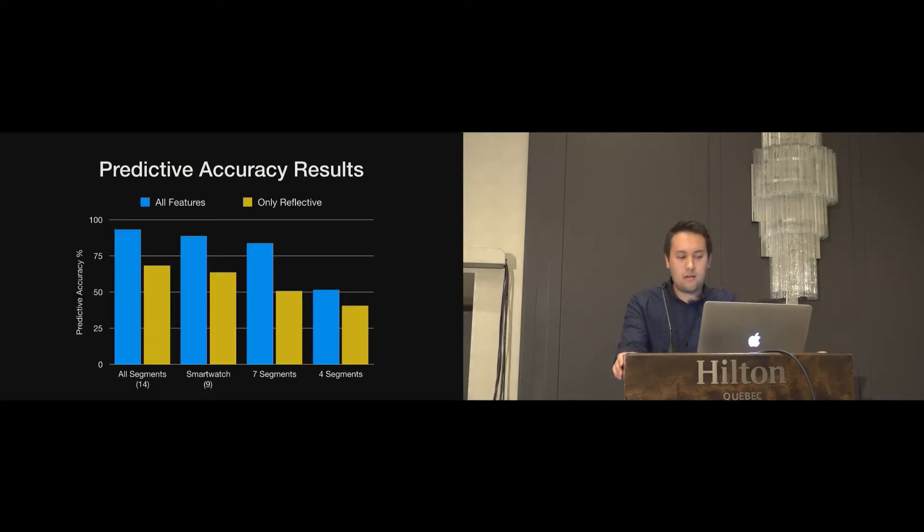Here are our results. It's clear that using all the features from the one-to-many system is better than using only single reflective measurements, and significantly so for the first three. It is worth noting that the smartwatch configuration did not suffer from a major decrease in performance, nor did actually halving the elements here. But four segments did suffer quite a lot, though that could be used for gesture onset detection.